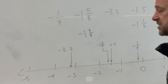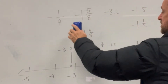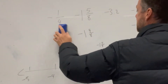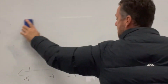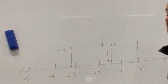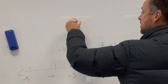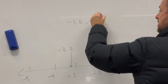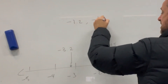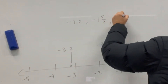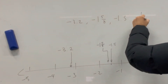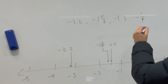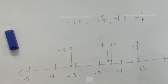Smallest to largest — if you were asked to write them as a list, it'd be: negative 3.12, negative 1 and 5 eighths, negative 1.5, and negative 1 quarter — written all in order from smallest to largest.